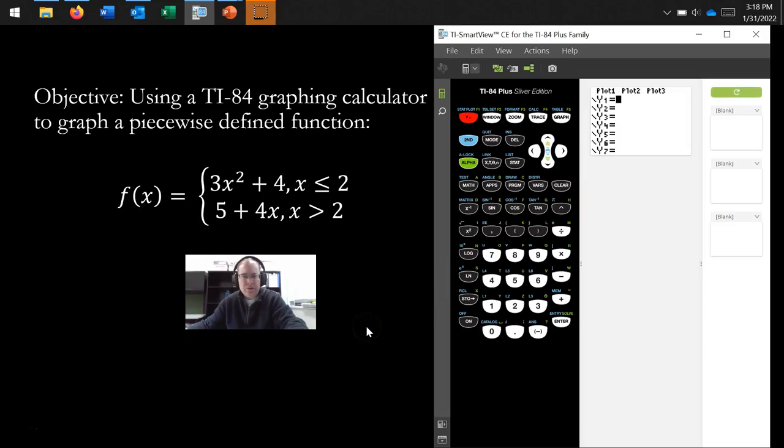Hello, in this video I'm going to discuss how to plot or graph a piecewise function using a TI-84 graphing calculator, which is what you see here. So the function we'll be working with is defined right here. We have f(x) is equal to 3x² + 4 when x is less than or equal to 2, and 5 + 4x whenever x is strictly greater than 2.